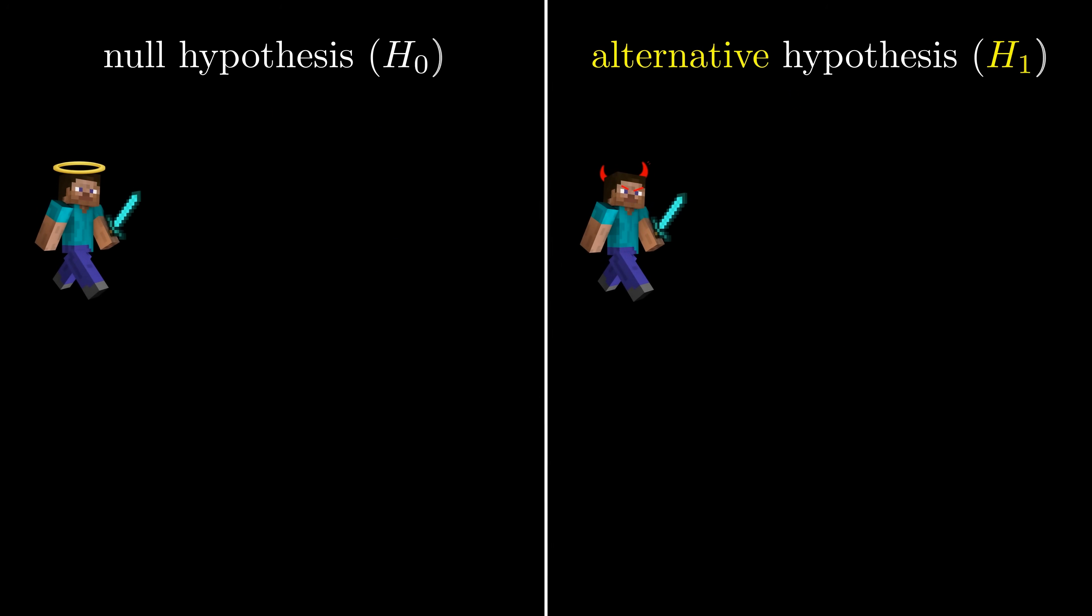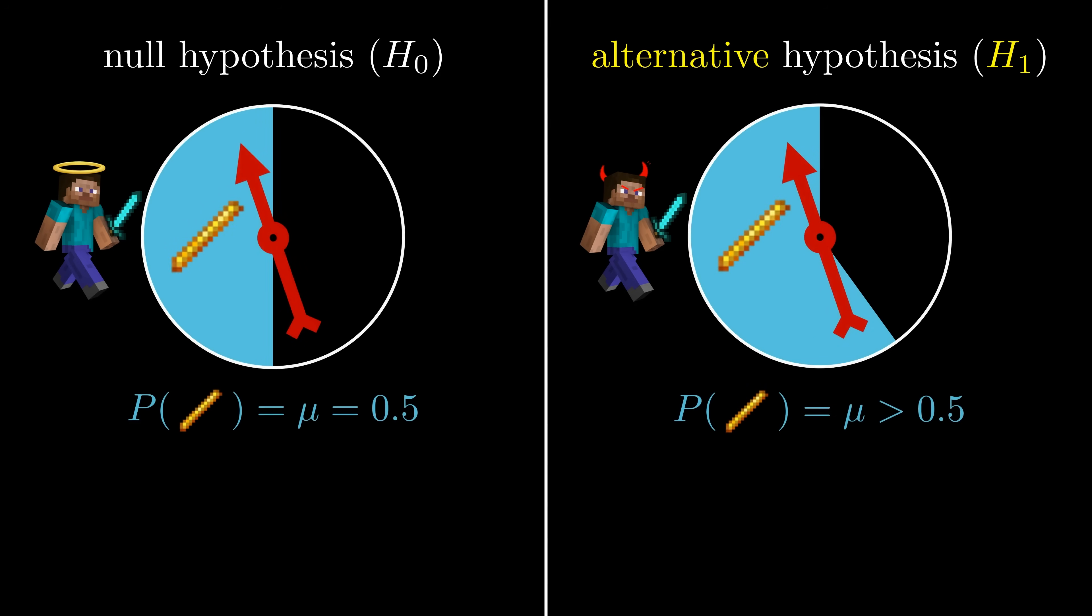Now look closely at the two worlds, or hypotheses, that we've formulated. Each hypothesis has a different probability model associated with it. Which of these models would be easier to work with when calculating probabilities?